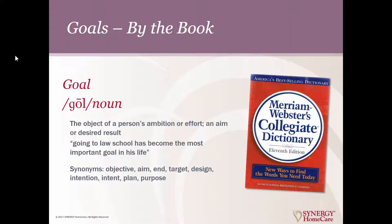So let's talk about what the definition of goals really are. According to Merriam-Webster's dictionary, a goal is an object of a person's ambition or effort, an aim, or desired result. For example, going to law school has become the most important goal in his life. We sometimes think about these as objectives, as an aim, as our end target, as our intention, as our plan, as our purpose — all of which have the same type of definition.